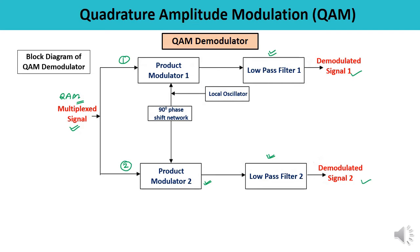The low pass filters are set to specific cutoff frequencies. For low pass filter one, the cutoff frequency is related to input signal one, and for the other it is related to input signal two. The filtered output at the output of low pass filter one and low pass filter two is the recovered original signal, and at the output you get these two signals back.